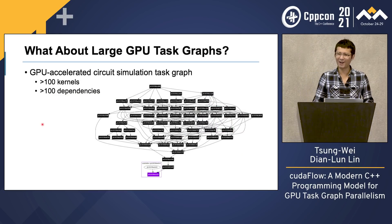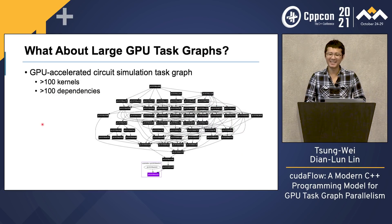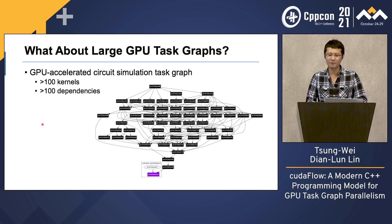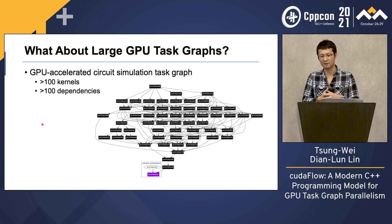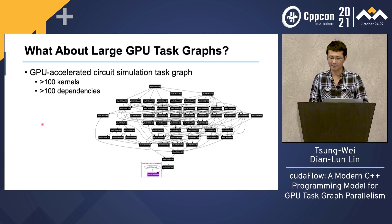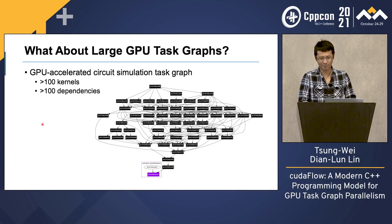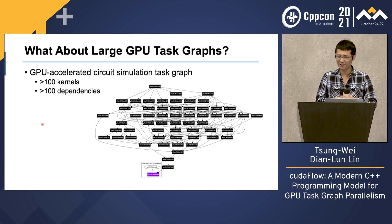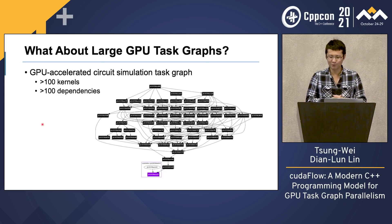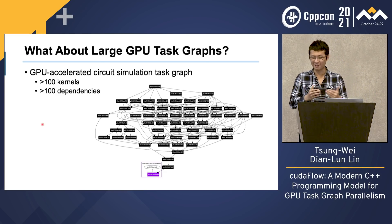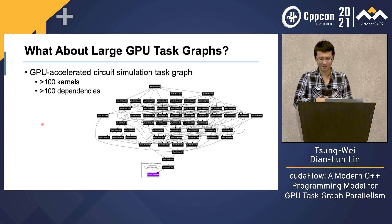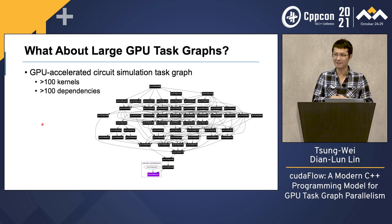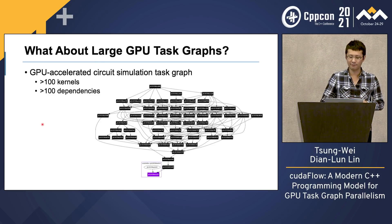But what about a graph like this? This is the GPU-accelerated circuit simulation task graph on the NVIDIA design we saw before. This task graph has more than 100 kernels and 100 dependencies. It's very complicated. If you want to do this with manual stream and event insertion, you're going to spend a lot of effort on debugging and maintaining the graph.